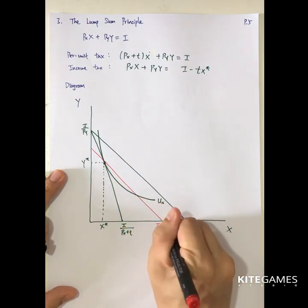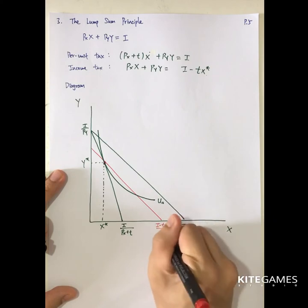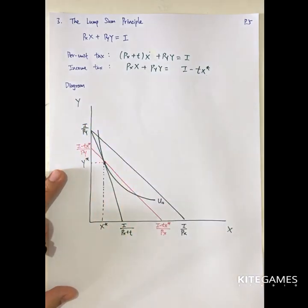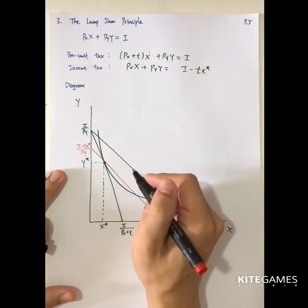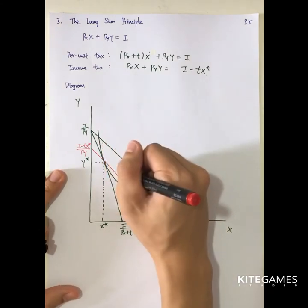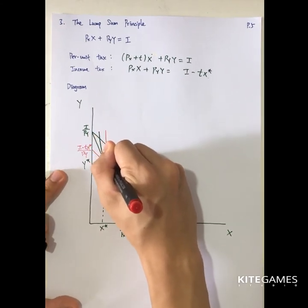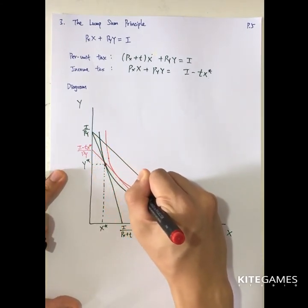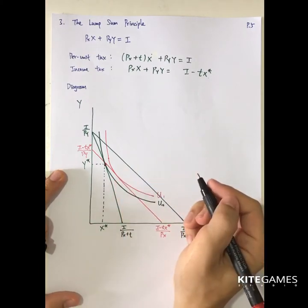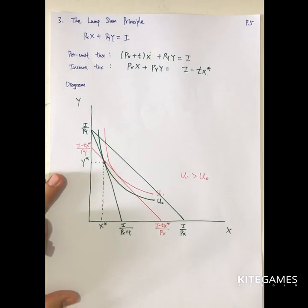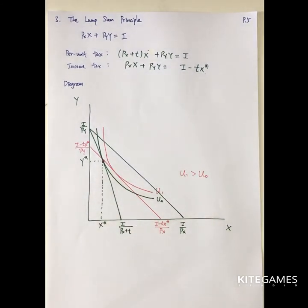This is (i minus t·x*) divided by px, and this is (i minus t·x*) divided by py. Then you can see that the consumer can reallocate the optimal consumption of x and y such that he or she can achieve a higher utility level. Here, U1 is higher than U0, showing that the consumer prefers the income tax to the per unit tax. This is how you use the diagram to show the result.